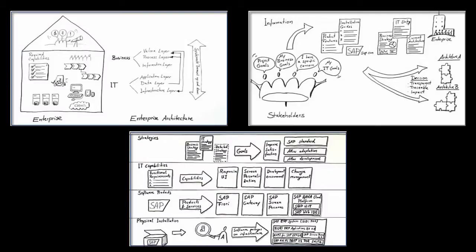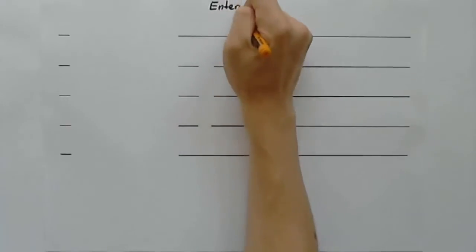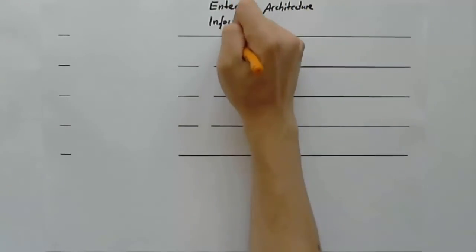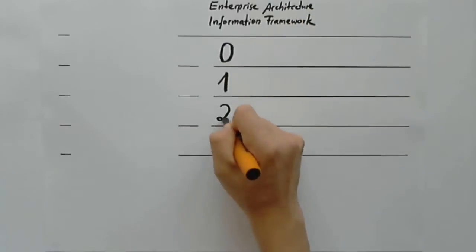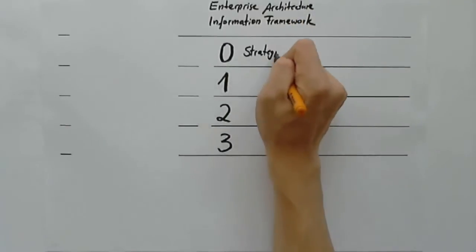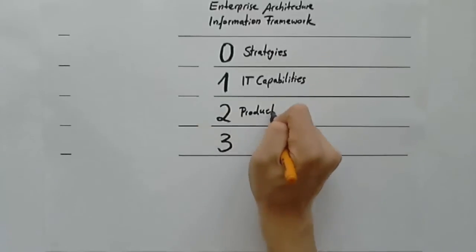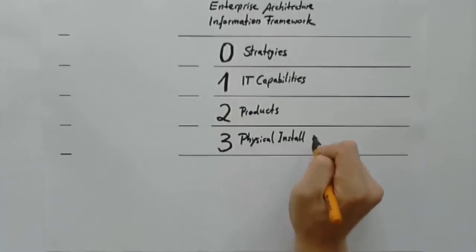The Enterprise Architecture-based Information Framework and its environment. In recent videos we spoke about Enterprise Architecture, the various needs in an enterprise and the resulting challenges. We also introduced an information framework that can help you to overcome these challenges. In this video we would like to take a closer look at this framework and connect it with what we said earlier when we looked at the challenges.